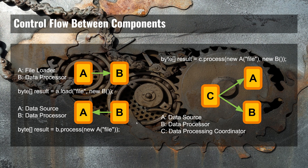In the second case, however, B needs to know about A, but A probably does not need to know about B, because A can just load the file and return the bytes, and B can do whatever it wants with the bytes and return that as a result. And in the third case, A does not need to know about B and B does not need to know about A either.